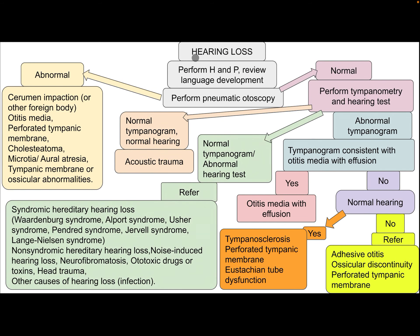How to approach the child with hearing loss after performing history and physical examination: review language development. Perform pneumatic otoscopy. If abnormal, this could be cerumen impaction or other foreign body, otitis media, perforated tympanic membrane, cholesteatoma, microtia, aural atresia, or tympanic membrane or ossicular abnormality.